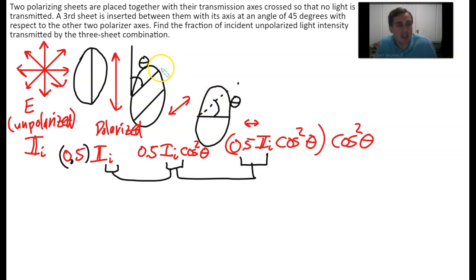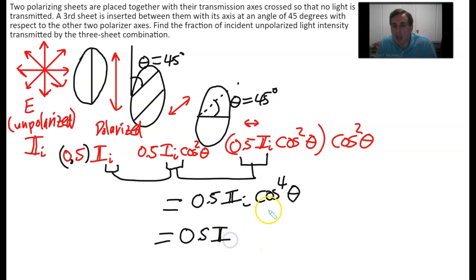Now by the way theta in each of these cases it turns out I think is the same because I think it's 45 degrees. So when we work all this out I think what emerges out here should be 0.5 I_initial cosine to the fourth theta. Now if theta is 45 degrees that's a very special value, because we have knowledge of our unit circle and we know that the cosine of 45 degrees should be square root of 2 over 2, which is the same thing if it's not rationalized as 1 over the square root of 2.